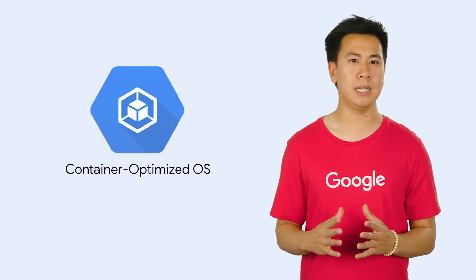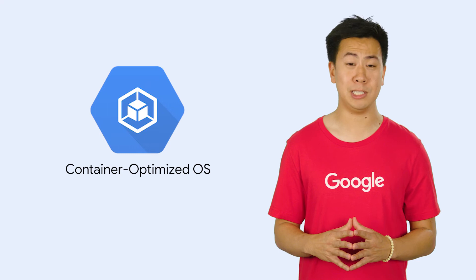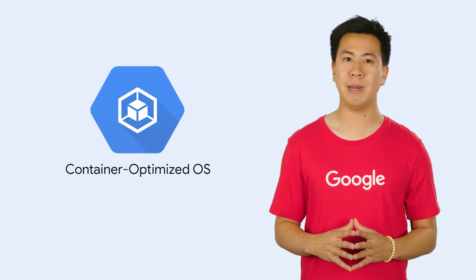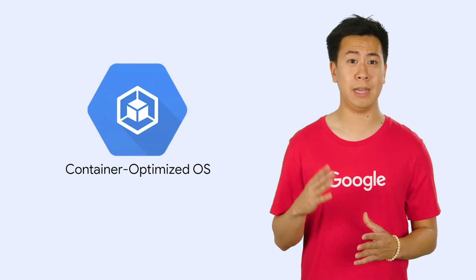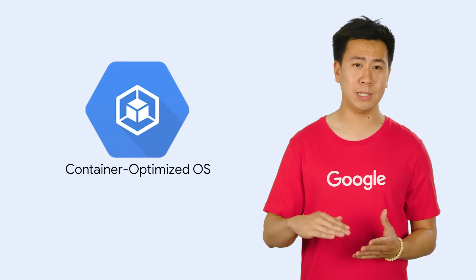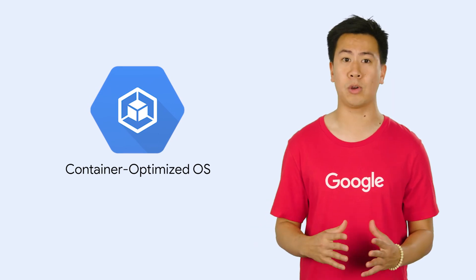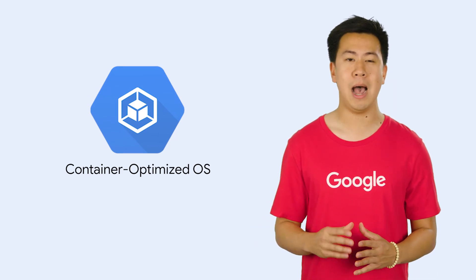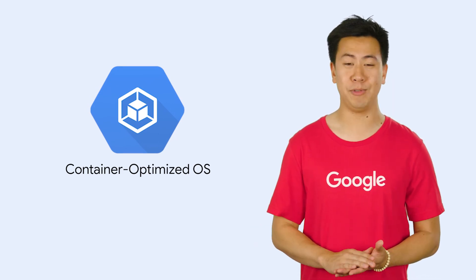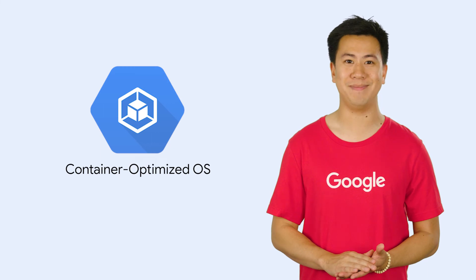Since it comes with all container-related dependencies pre-installed, container-optimized OS allows your cluster to quickly scale up or down in response to traffic or workload changes, optimizing your spend and improving your reliability. Container-optimized OS powers many GCP services, such as Kubernetes Engine and Cloud SQL, making it Google's go-to solution for container workloads.